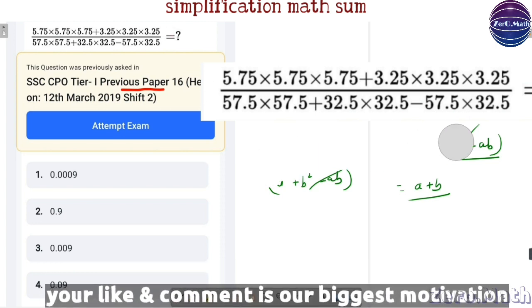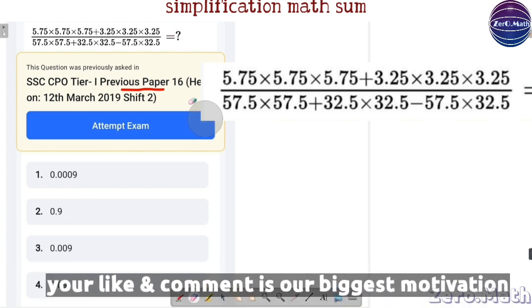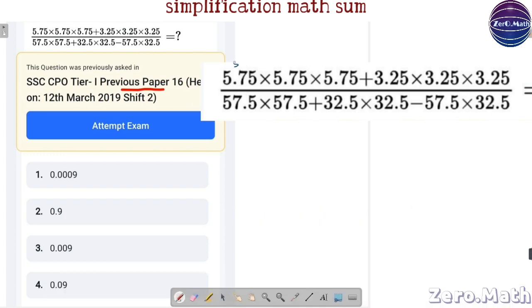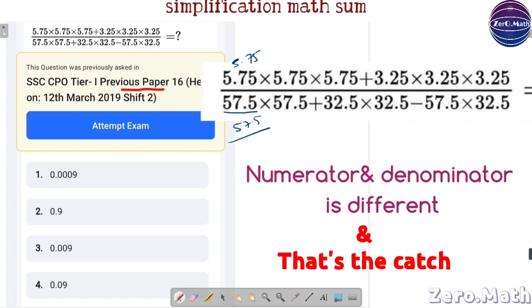Now, let's have a look at this question. As I said earlier, this question is bit different than earlier question. You can see in numerator, the term given is 5.75, whereas in denominator, it's 57.5.